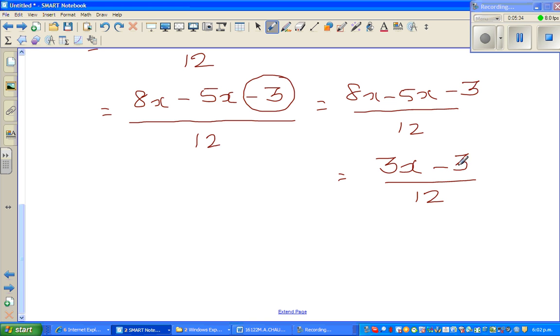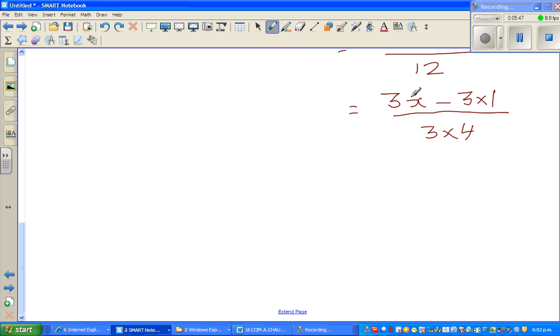Now what can you factor out here? I'm going to do one more step. Can I write 3x minus 3 times 1 over 3 times 4? So what can you factor out? You've got a 3 sitting here and a 3 sitting here. So if you factor out a 3, you'll have (x - 1) over 3 times 4, just like that. So this 3 and this 3 can be cancelled. And this is your ultimate answer: (x - 1)/4.